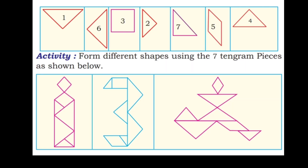Number 1, 2, 3 — cut the 7 pieces according to their shape. You can use triangles, squares, and parallelograms.